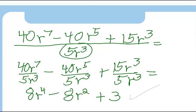This is our answer: 8r to the 4th minus 8r squared plus 3 and we are done.